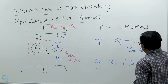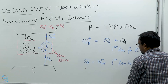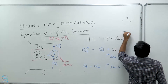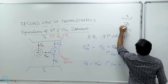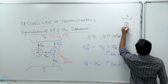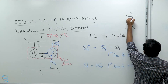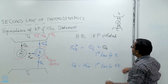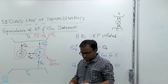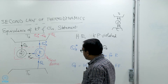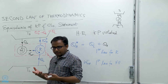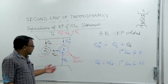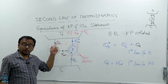If we redraw the combined device, it looks like this: you have T_H, you have T_L, and on net what this device is doing is taking Q_L from the low temperature reservoir and supplying the same heat to the high temperature reservoir, with no work input required. This is of course impossible according to the Clausius statement. This shows that if you construct a device that violates the Kelvin-Planck statement, it will always be possible to construct a device that violates the Clausius statement.